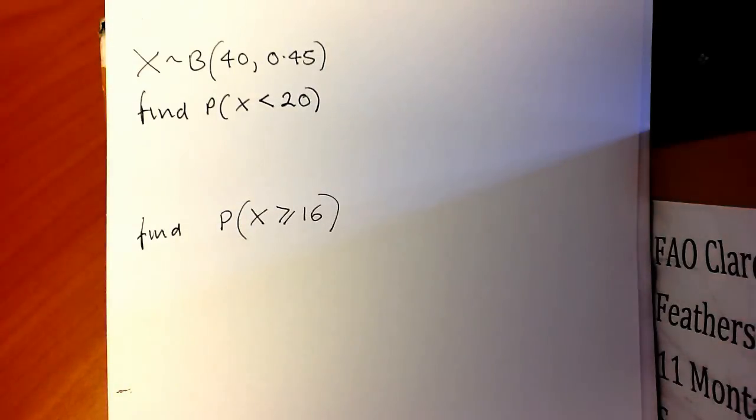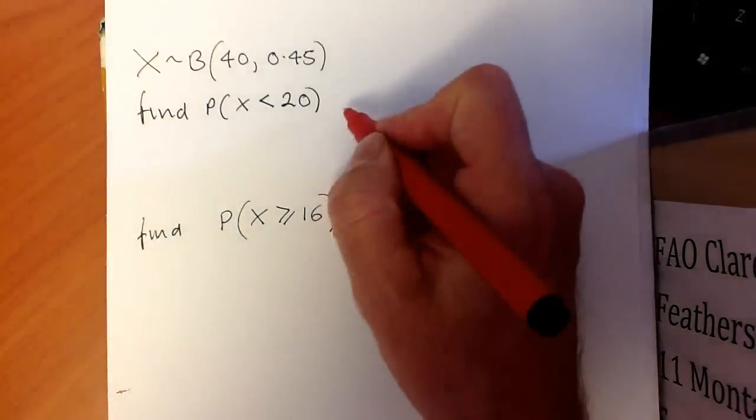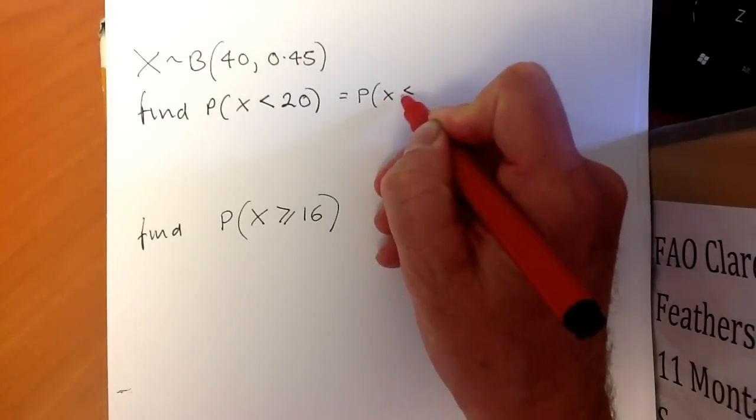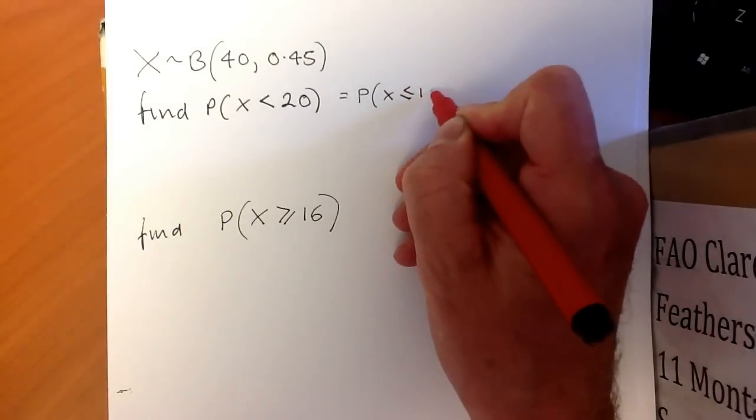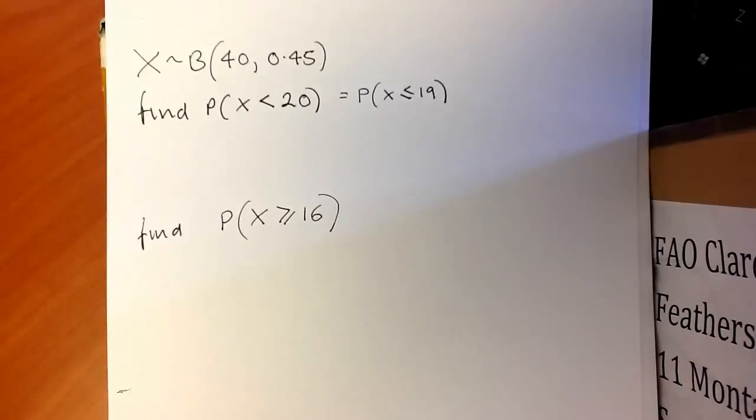The first question is to find the probability that X is less than 20. It's important to realize that the binomial distribution is discrete, so this means we need to find P(X ≤ 19). We can't be equal to 20, so we need less than or equal to 19.